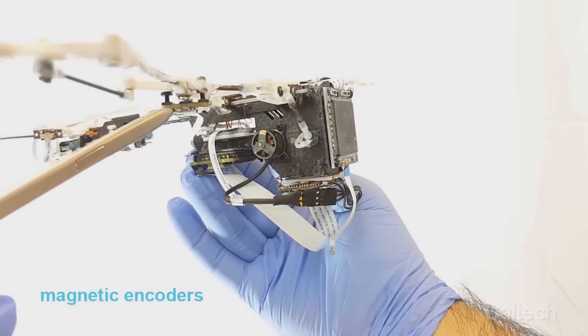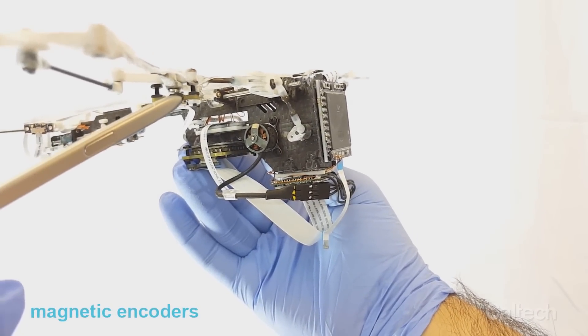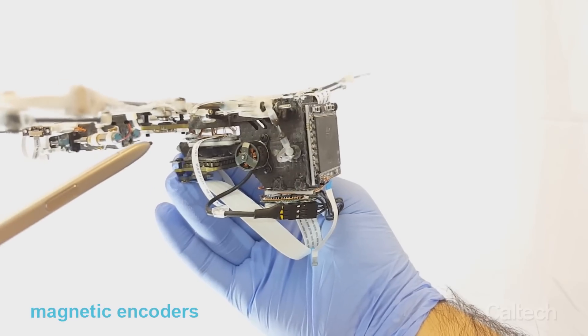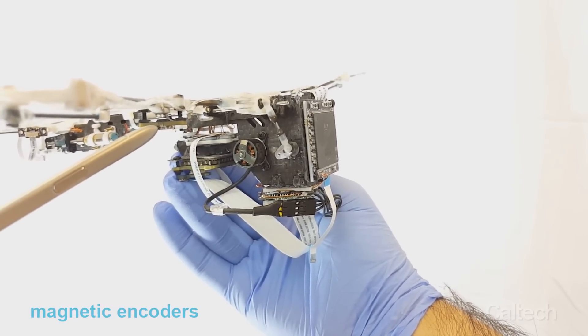We have five magnetic encoders located at the elbows, hip joints, and shoulder joints to read the relative angles between the limbs with respect to the body.